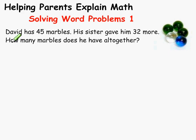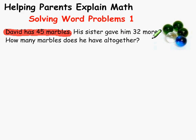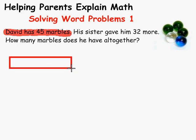So here's our question. David has 45 marbles. His sister gave him 32 more. How many marbles does he have all together? So David has 45 marbles — let's make a thinking block for 45. Just an average size block; we don't know if it's going to be the biggest one or the smallest one. And we'll write the number 45 in it.